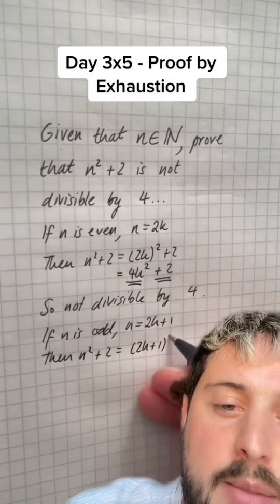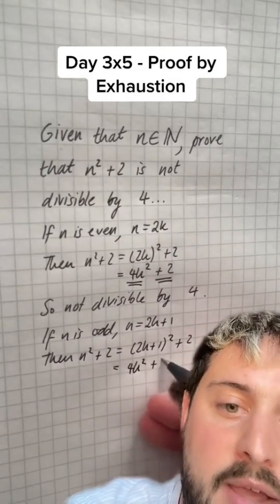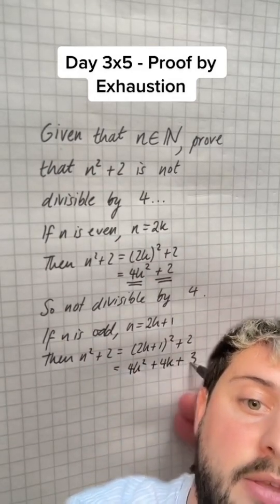Then n squared plus 2 would be 2k plus 1 squared plus 2. So that expands to 4k squared plus 4k plus 3, that's the 2 and the 1 added.